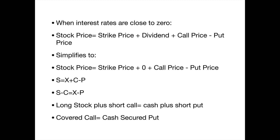If we move C over to the other side, we get S minus C equals X minus P. S minus C means you're long the stock and short a call — that sounds a lot like a covered call — which equals X, the cash needed at that strike price to purchase the stock, minus P, which is short a put. So this simplifies to: a covered call equals a cash-secured put. S minus C equals X minus P. Stock plus short call is a covered call; cash plus short put is a cash-secured put. This is another way of showing that a covered call has the same payoff as a cash-secured put.